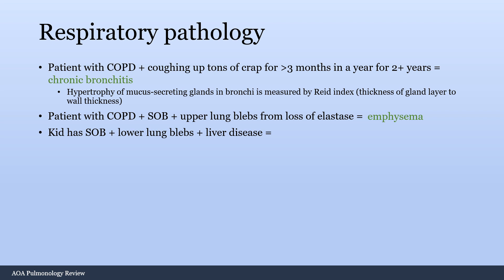What if you have a kid with emphysema? There's a kid with shortness of breath, they have lower lung blebs instead of upper lung blebs, and they also happen to have liver disease — that's alpha-1 antitrypsin deficiency. A kid should not have emphysema even if they were smoking, and it takes time to develop emphysema. If there's a kid with emphysema and liver disease, it's alpha-1 antitrypsin deficiency. They should not smoke because they'll develop lung disease way, way earlier than even a normal chronic smoker.